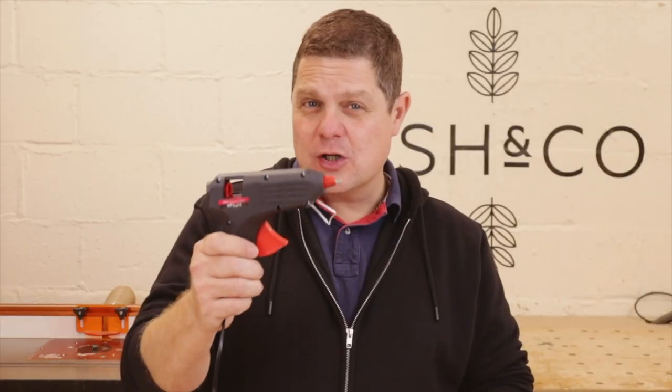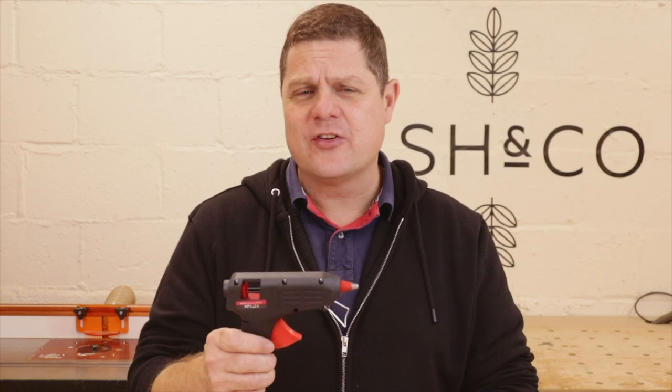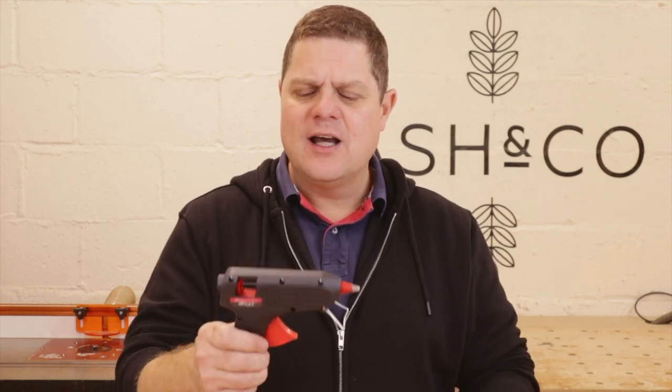Next up then is the glue gun. This is probably the most dangerous of all of the items we've used so far. You've got to be really careful with these, because once they get up to temperature, this silver bit on the end here is as hot as the inside of an oven. And if you touch it, you really will burn yourself. So you have to be very, very careful. Now, when we're using glue guns, we've got some techniques we can use to avoid burning ourselves.